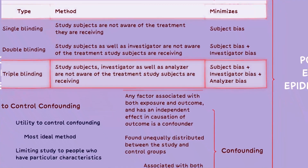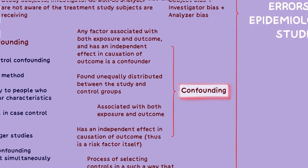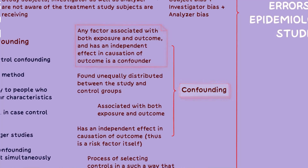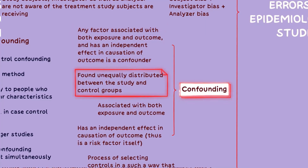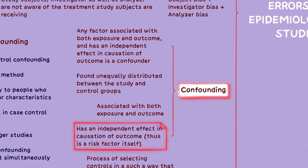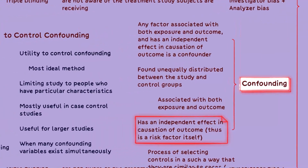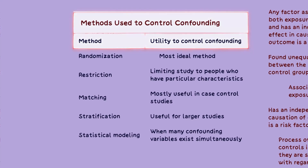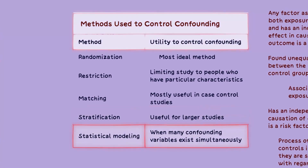When talking about errors, it is also important to know what confounding is. Confounding occurs when a factor associated with both the exposure and the outcome has an independent effect on the outcome. It is found unequally distributed between the study and control groups, and confounders can distort the results if not properly accounted for. Ways to control confounding include restriction, stratification, and statistical modeling.